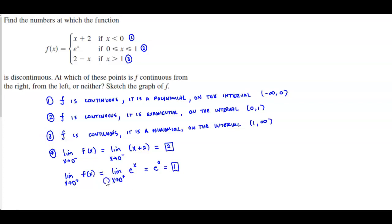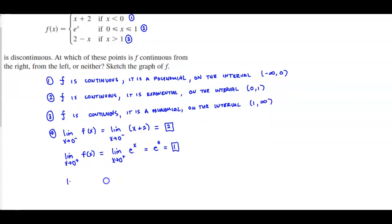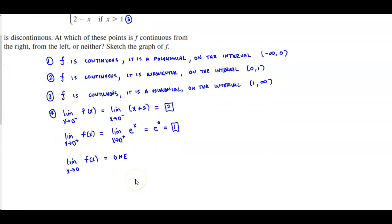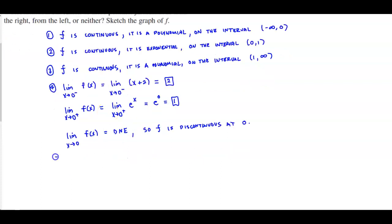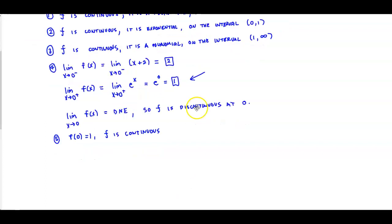So that tells us the limit as x approaches 0 of the function does not exist, which means f is discontinuous at 0. However, since f of 0 equals 1, f is continuous from the right at 0.